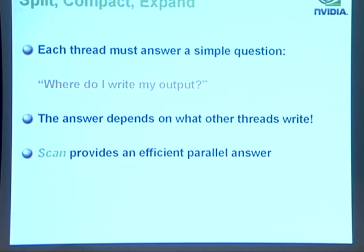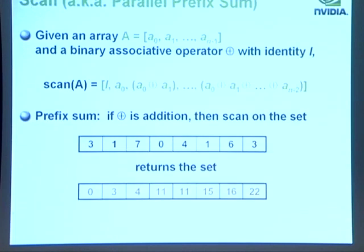In all three examples — split, compact, and expand — each thread has to answer: where do I write my output? If you don't know ahead of time how many elements you're going to write, the thread doesn't know where it should start writing, and the answer depends on what the other threads write. We can answer this question with an algorithm called scan, or parallel prefix sum. Given an array of elements and a binary associative operator with identity I, the scan of that array is defined as shown.